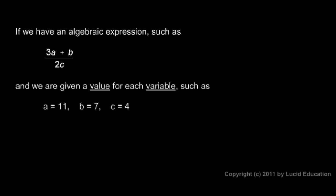So the expression becomes this: 3 times 11. Remember the 3a is 3 times a. And that means multiplication right there. Then I have plus 7. Instead of the b I wrote 7. All that is over 2c. And c is 4. So I'll write 2 times 4. Now let's evaluate this.